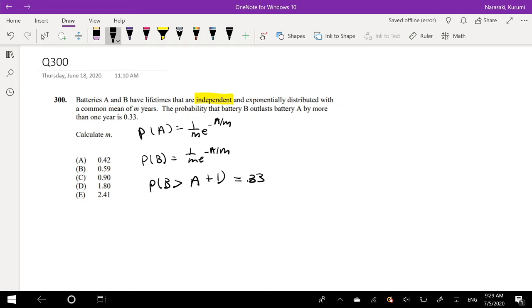So in order to solve this problem, we first need the joint probability distribution. But because we know that they're independent, that means the probability distribution function P(A,B) is just equal to probability of A times probability of B. So our probability P(A,B) function would equal 1 over M squared, e to the negative A over M, times e to the negative B over M. This exponential distribution exists in 0 to infinity.